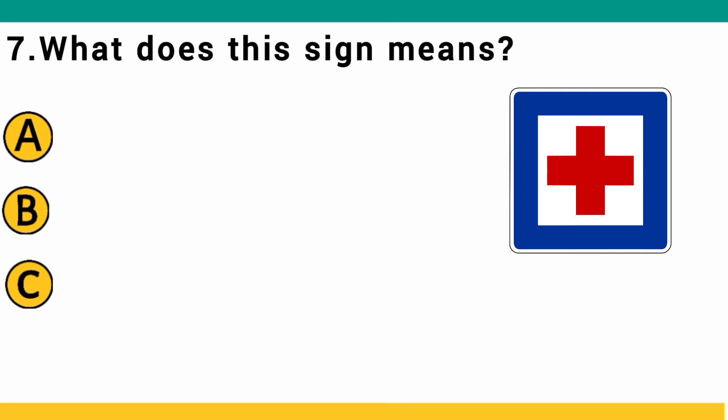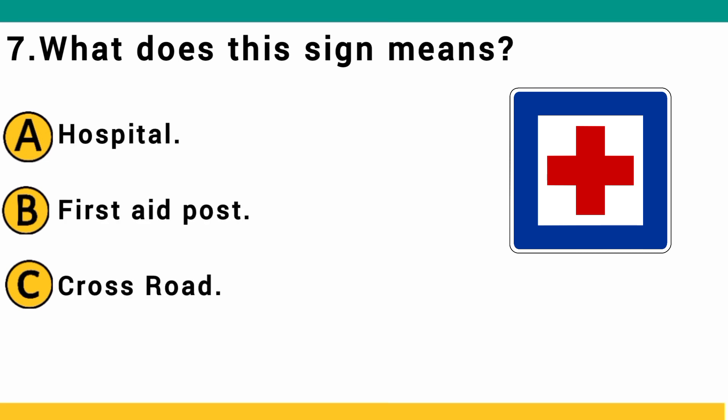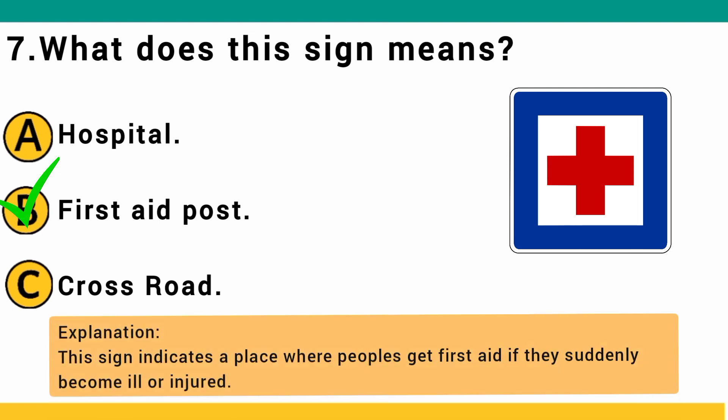What does this sign mean? A) hospital, B) first aid post, or C) crossroad. The correct answer is B: first aid post. This sign indicates a place where people can get first aid if they suddenly become ill or injured.